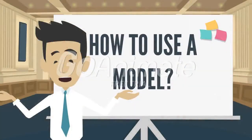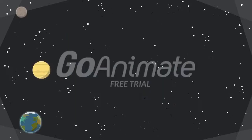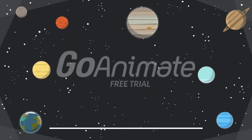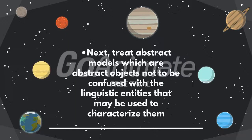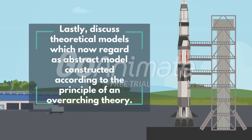Now we know that there are many uses of modeling. Models are objects that can be used to represent reality by exhibiting a designated similarity to a physical object. Next, abstract models are abstract objects not to be confused with the linguistic entities that may be used to characterize them. Lastly, theoretical models are now regarded as abstract models constructed according to the principle of an overarching theory.